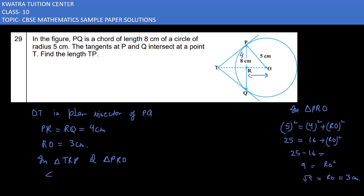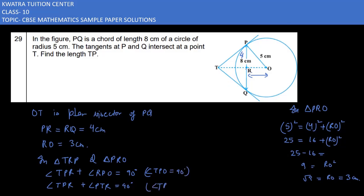Angle TPR plus angle RPO equals 90 degrees. Also, angle TPR plus angle PTR equals 90 degrees. This means angle RPO equals angle PTR. Also, angle TRP equals 90 degrees and angle TPO equals 90 degrees. Therefore, by AA rule, the two triangles are similar.